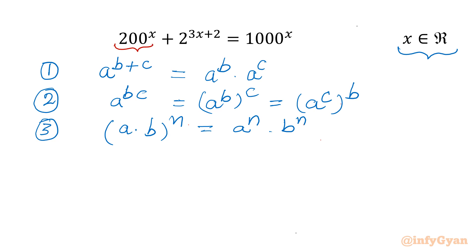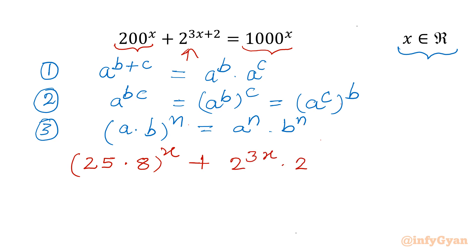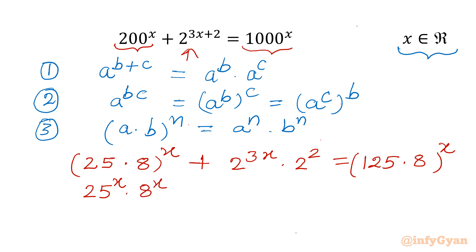Now I will factor 200 and 1000. So 200 I can write as 25 times 8, whole power x. Using property number 1, I can write 2 power 3x times 2 power 2. The right hand side: 1000 can be written as 125 times 8, whole power x. Using property number 3, this equals 25 power x times 8 power x, plus 2 power 3 whole power x times 4, equal to 125 power x times 8 power x.